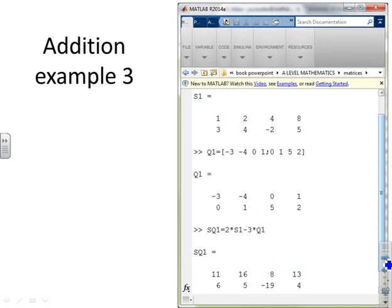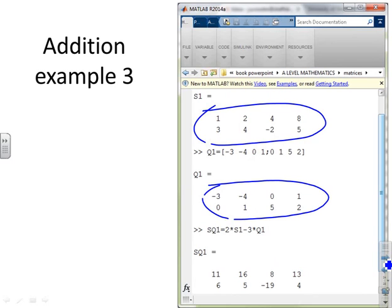The matrices don't have to be square. Here in this example, you'll see that S1 is 2 by 4, Q1 is 2 by 4. And now I've written 2 times S1 minus 3 times Q1, so I've made it slightly more involved. And you can pause the video if you want to check that this has actually worked, but MATLAB has done it for you.